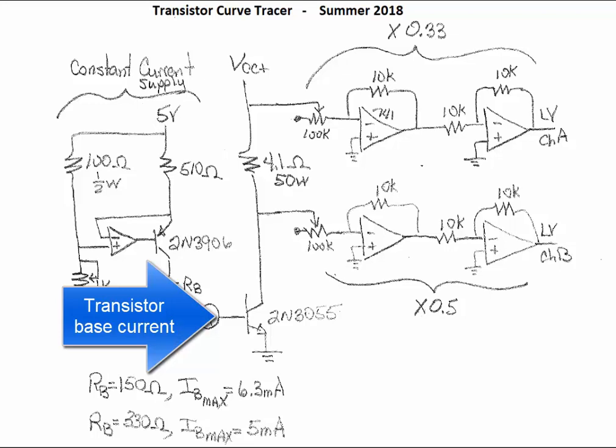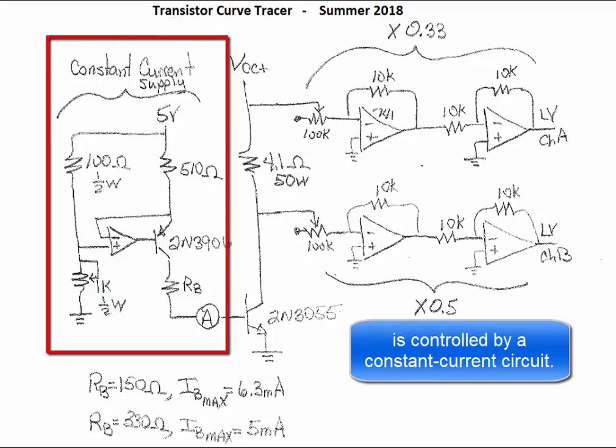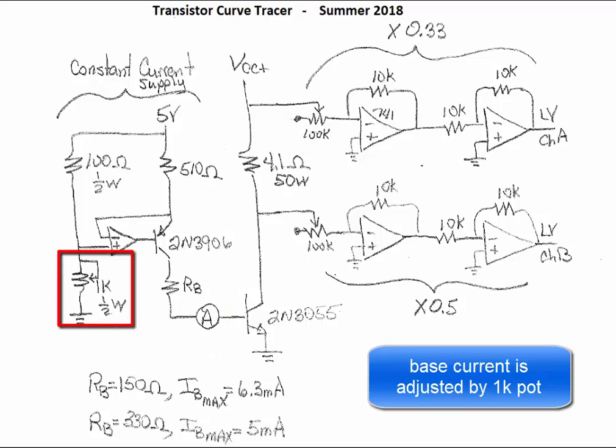The transistor base current is controlled by a constant current circuit. Base current is adjusted with this 1k potentiometer.